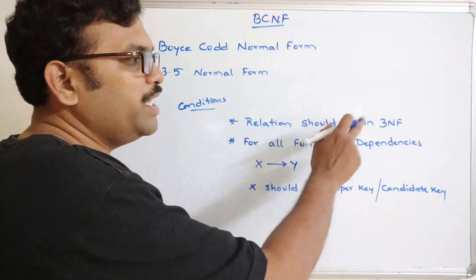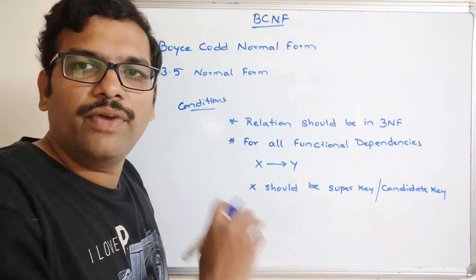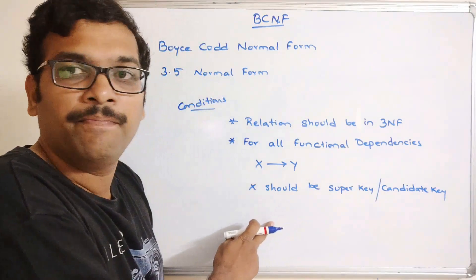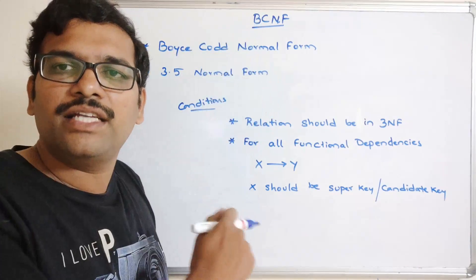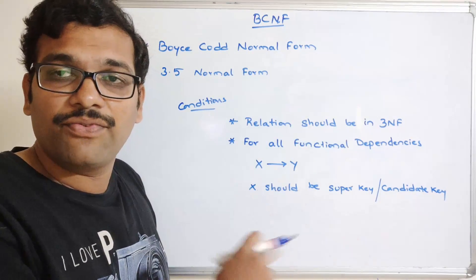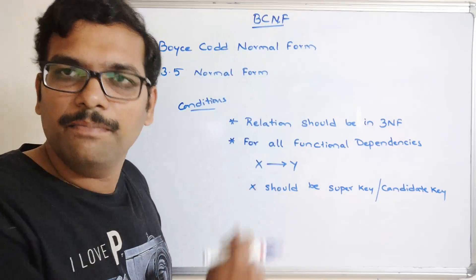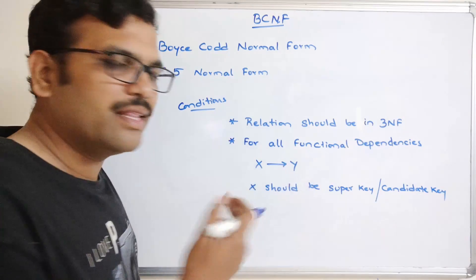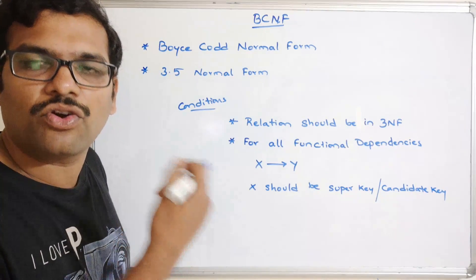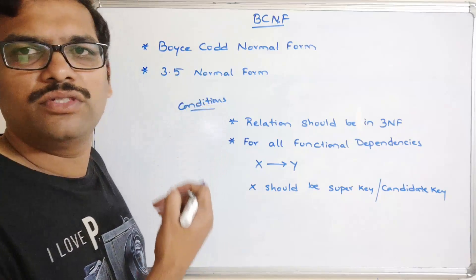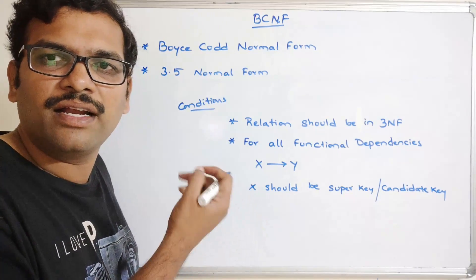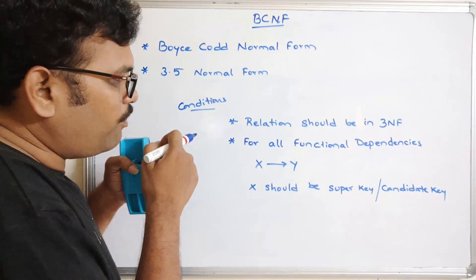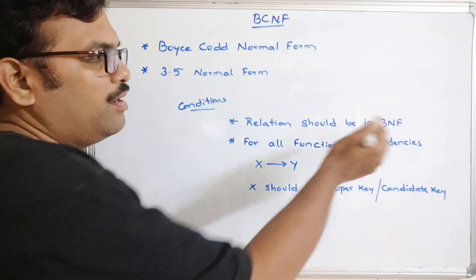First the relation should be in 3NF, then only we proceed with the second condition. If any relation is in BCNF, we can say it is in 3NF, but if a relation is in 3NF we can't say it is in BCNF. So BCNF is stronger than 3NF and it reduces some anomalies and redundancies present in 3NF.